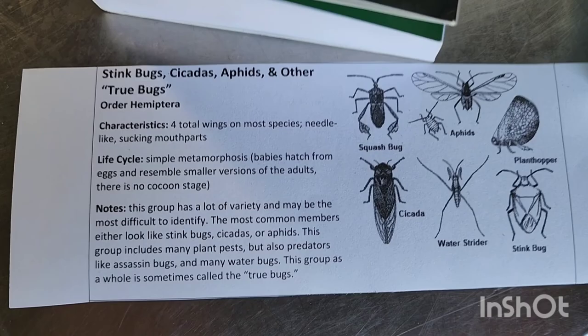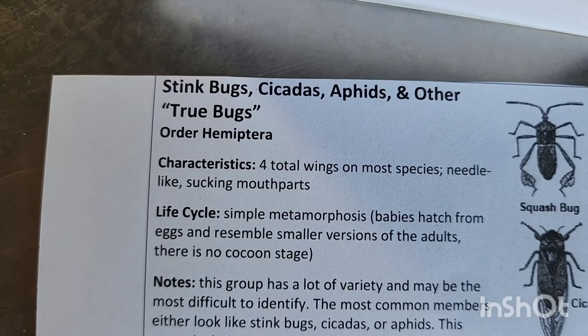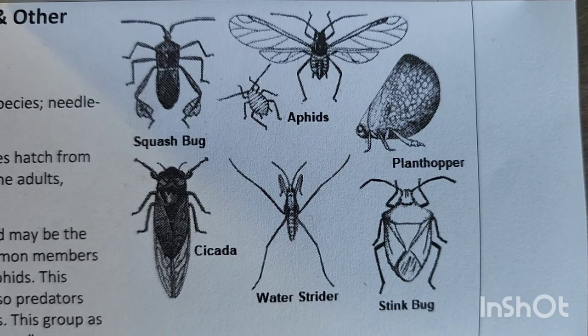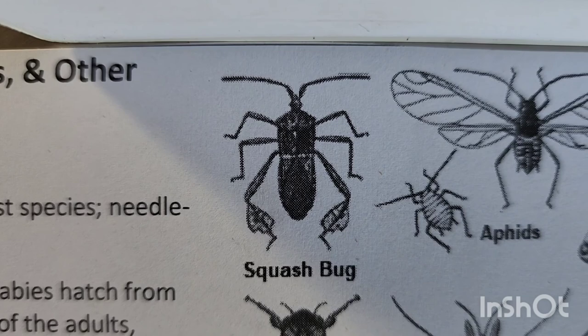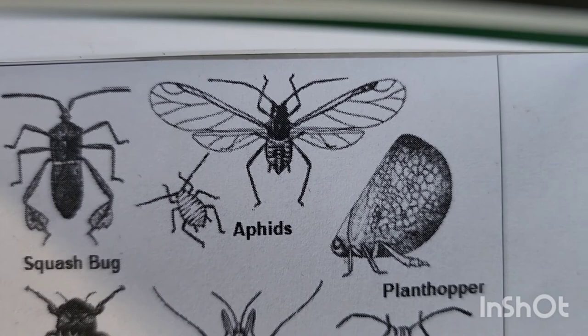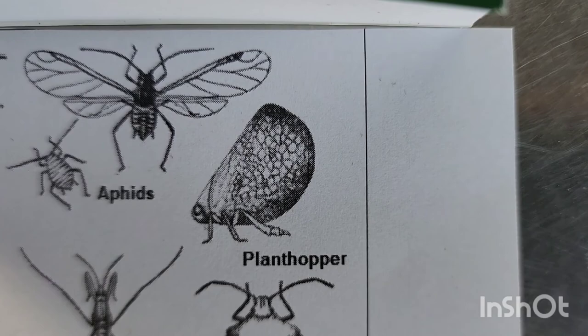The order they're responsible for is called Hemiptera. This includes stink bugs, cicadas, aphids, and a few other things. This whole group is sometimes called the true bugs. You can see stink bugs, but also some things that look kind of like stink bugs, like squash bugs and assassin bugs. There are also things called plant bugs. This group includes cicadas, aphids, which are often plant pests, and various hoppers — not grasshoppers, but things like plant hoppers and leaf hoppers, which are very small creatures that are very good at hopping.